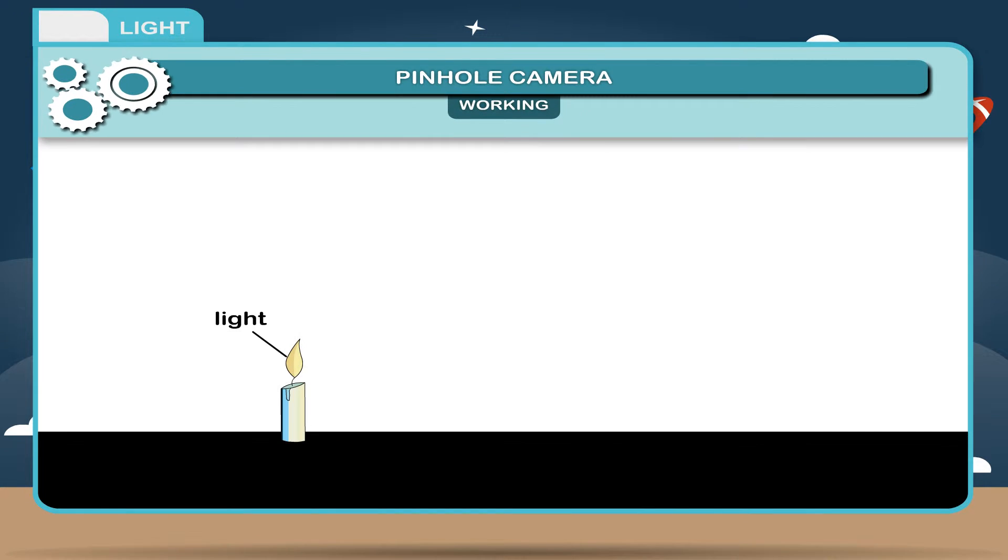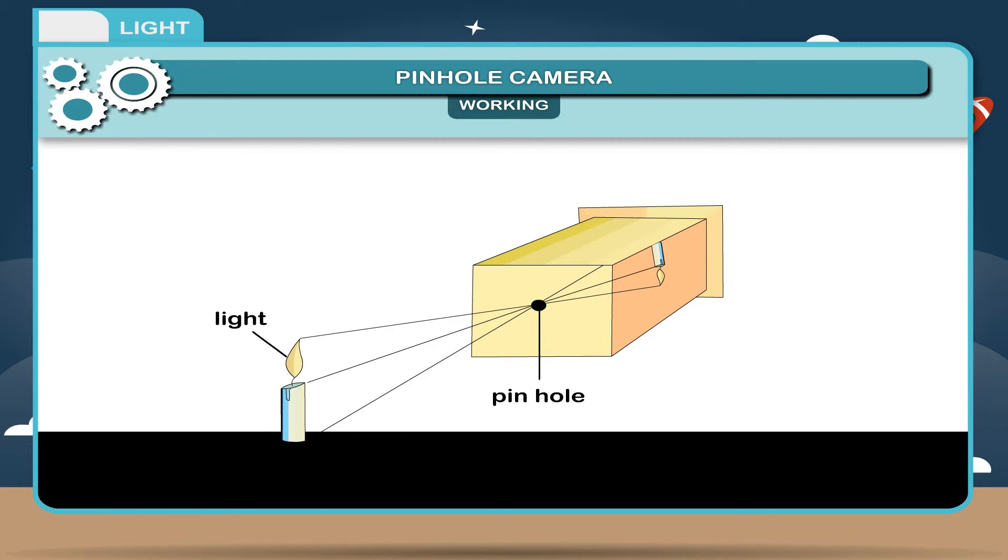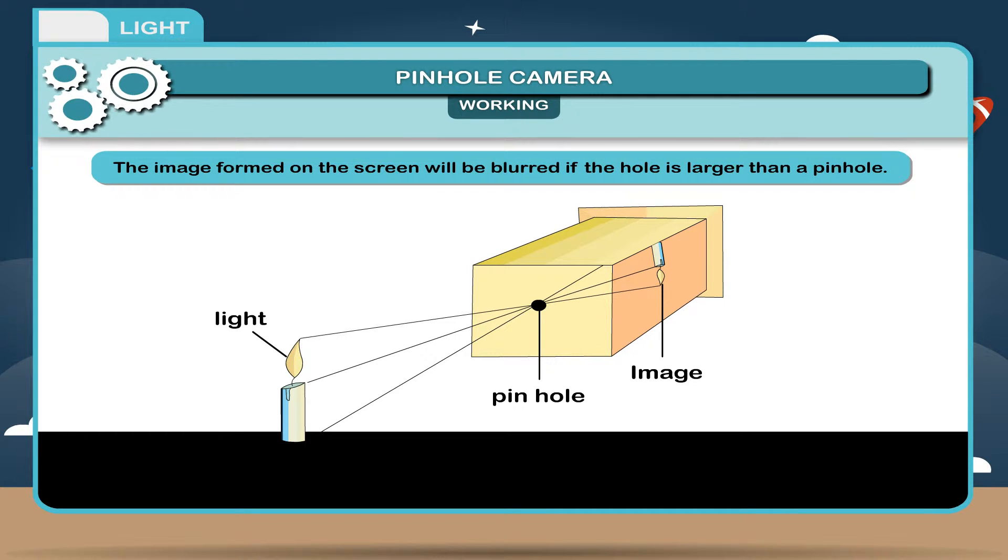Working. The light from the top of the candle travels in a straight line through the pinhole and the image on the pinhole camera screen is upside down. It continues to go in a straight line until it hits the screen. This means it must strike at the bottom. Light from the bottom of the candle strikes at the top. The image formed on the screen will be blurred if the hole is larger than a pinhole.